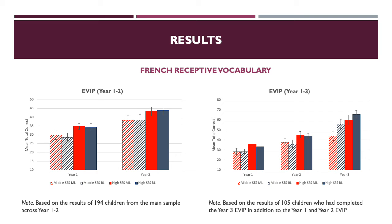The graph to the left shows the EVIP scores pulled from the main sample over two years, and the graph to the right shows the results from the smaller sample, which provided EVIP data over three years. The results of two-way repeated measures ANOVAs suggested that students greatly expanded their French vocabulary over time, and high SES students began with an advantage and continued to outperform middle SES students throughout the years. Although there were no language differences over the first two years, bilinguals were seeing greater improvements when the subset of data from year three was included.